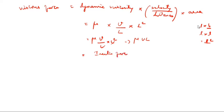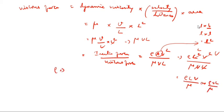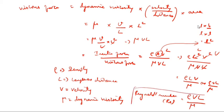Inertia force by viscous force equals rho A V squared divided by mu V L. A is represented as L squared, so rho L squared V squared divided by mu V L. One L cancels, one V cancels, giving rho L V by mu, or rho V L by mu. Here rho is density, L is length, V is velocity, mu is dynamic viscosity. So Reynolds number Re equals rho V L by mu.